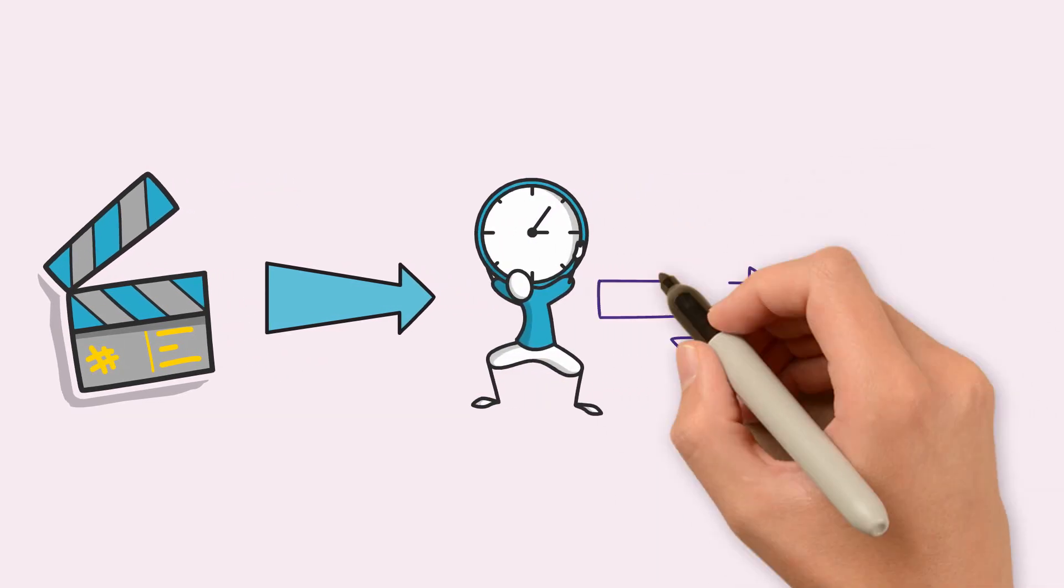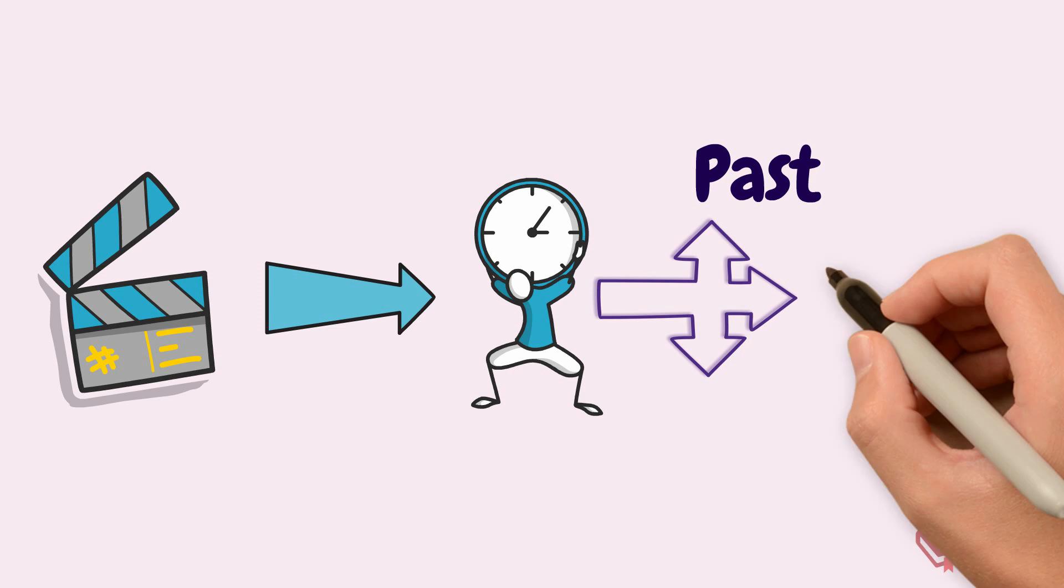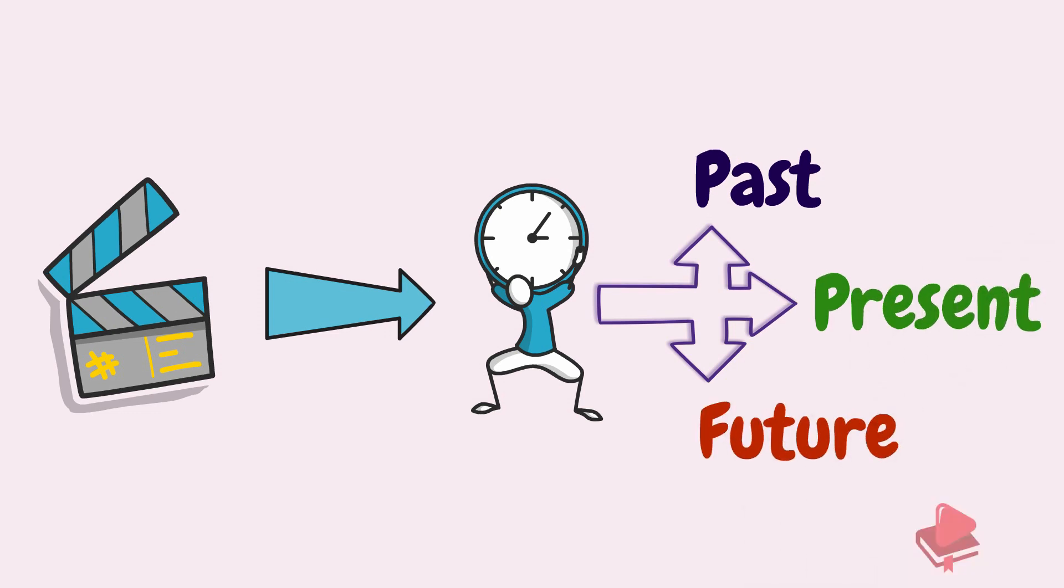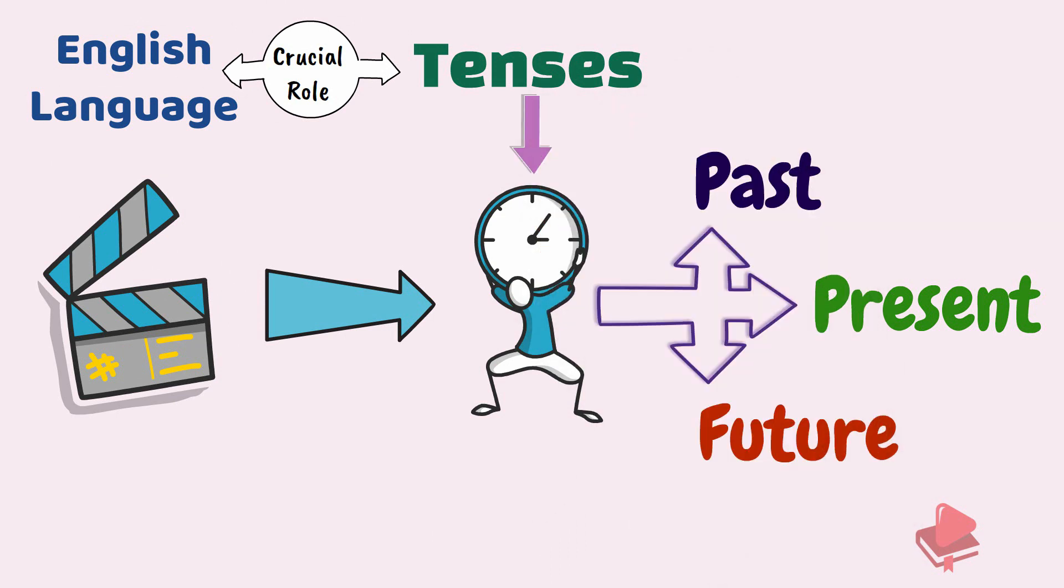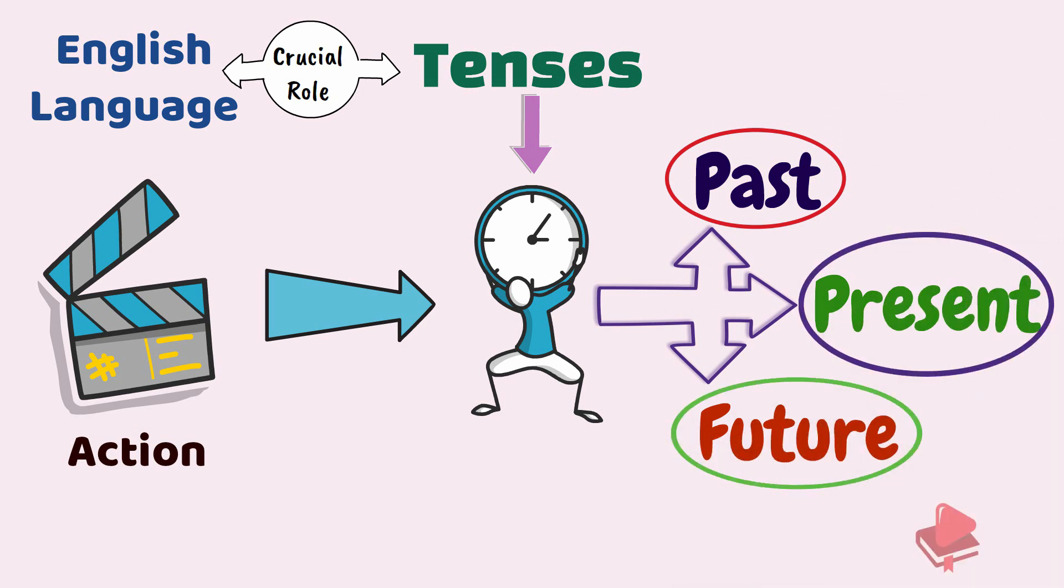The time the action took place could be past, present, or future. Tenses play a crucial role in English language and it denotes the time and action that takes place, whether something happened in past, in present, or it was taken or happened in future.